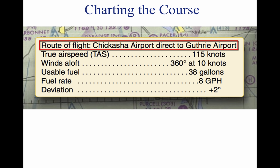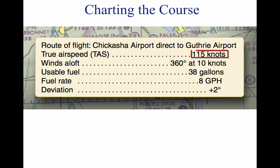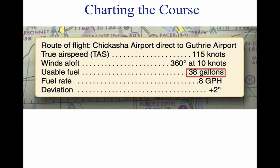Route of Flight: Chickasha Airport direct to Guthrie Airport. True airspeed (TAS): 115 knots. Winds aloft: 360 degrees at 10 knots. Usable fuel: 38 gallons. Fuel rate: 8 gallons per hour. Deviation: plus 2 degrees.